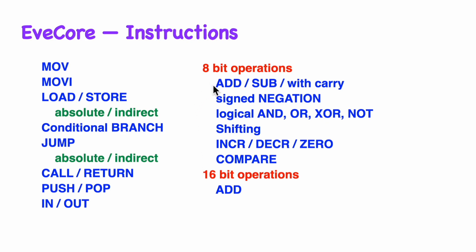Of course we have a bunch of arithmetic and logical operations for both 8 bits and 16 bits. We can do addition and subtraction both with and without carry. We have sign negation, logical operators, four shifting instructions, and instructions to increment, decrement, and zero out the A register. We also have a compare instruction, an instruction that will do addition for 16-bit register pairs, as well as moving data between register pairs.